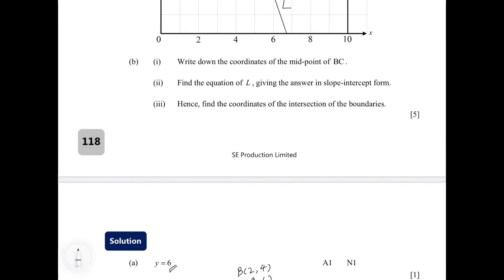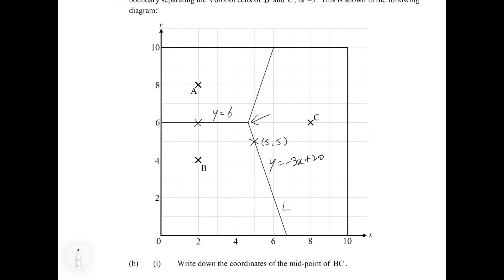Finally, in part B3, we find the coordinates of the intersection of the boundaries. Looking at the diagram, the equation of L is y = -3x + 20, and the other boundary is y = 6, which is the original boundary separating the Voronoi cells of A and B. The point of intersection lies on the line y = 6, so all points on this horizontal line have y-coordinate 6. We just need to find the corresponding x-value by solving the system of equations of these two straight lines.